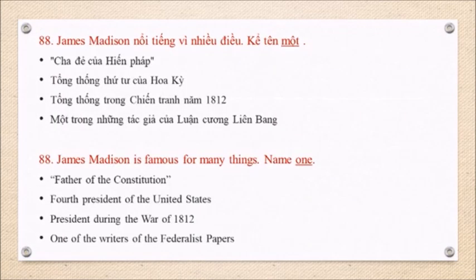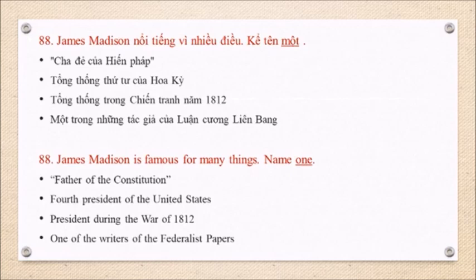Question 88: James Madison is famous for many things. Name one. Father of the Constitution. Fourth President of the United States. President during the War of 1812. One of the writers of the Federalist Papers.